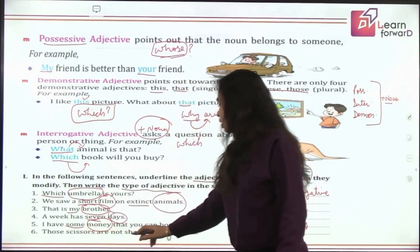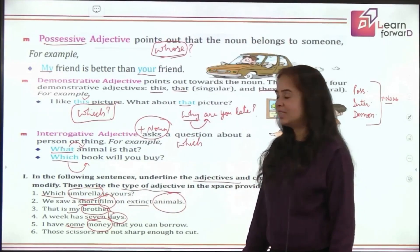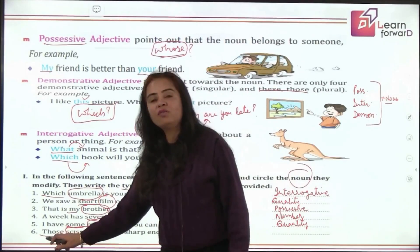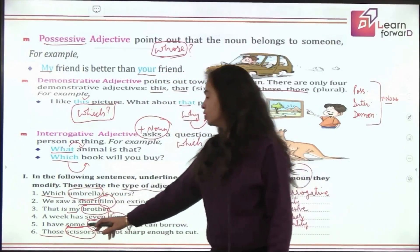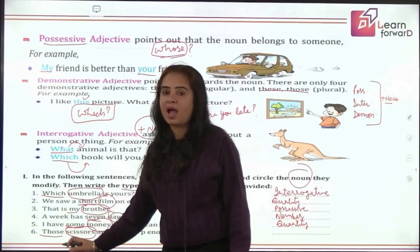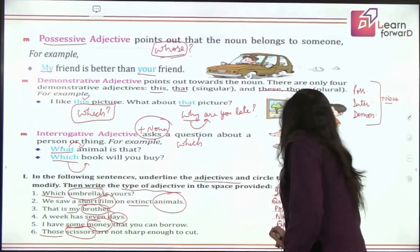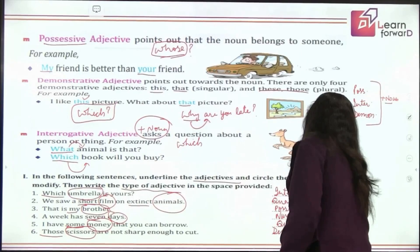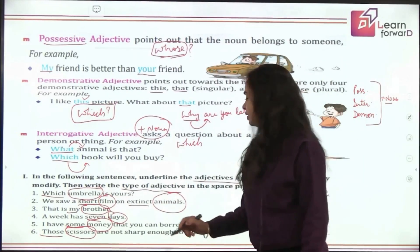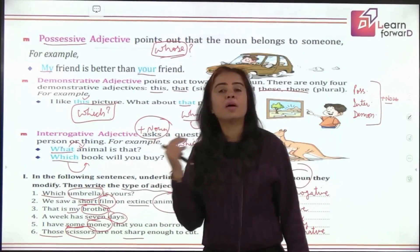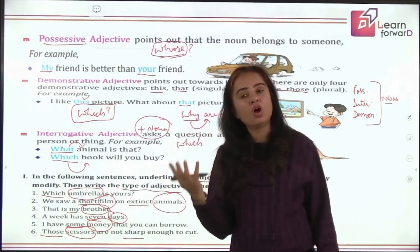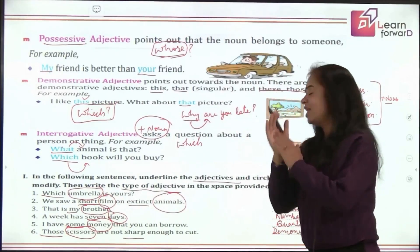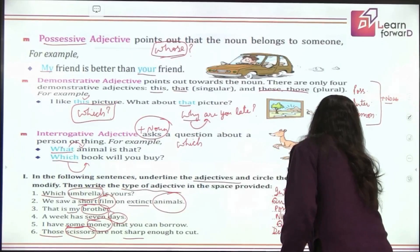Next: 'Those scissors are not sharp enough to cut.' The adjective is 'those' and the noun is 'scissors.' With 'those' you have a noun, so this demonstrative word is an adjective — 'those' is a demonstrative adjective. Is there another adjective? Yes — 'sharp' is describing the scissors, so 'sharp' is another adjective and it is the adjective of quality.